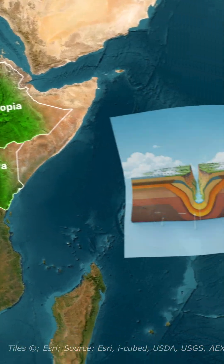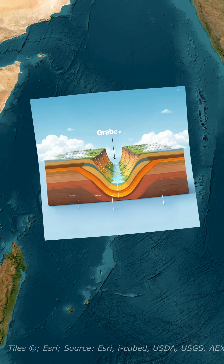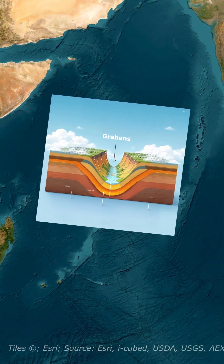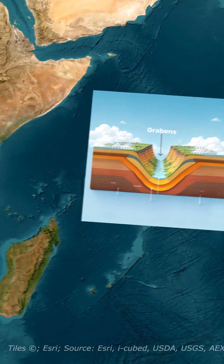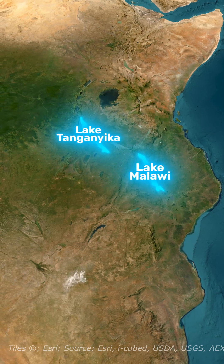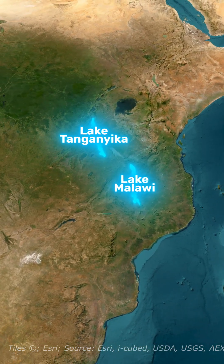The faults pulled apart and created grabens, which are large valleys that descend as the adjacent land pulls away. Lakes like Malawi and Tanganyika form in these massive basins.